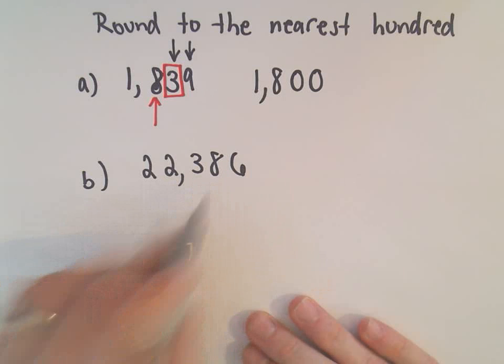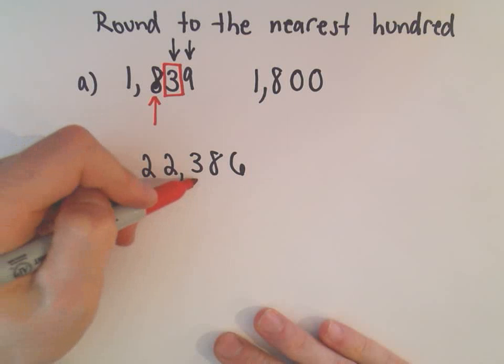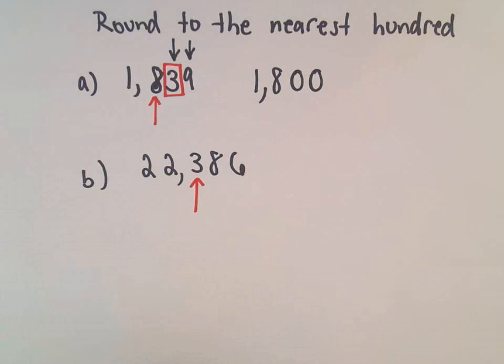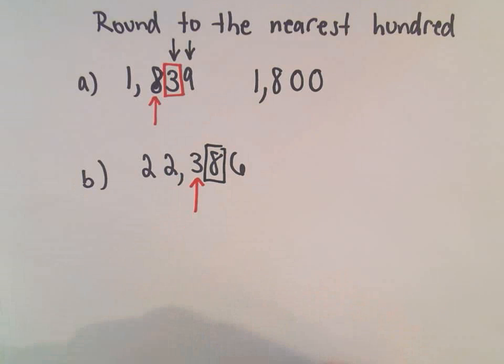Same thing for $22,386. Okay, I'm going to pick out the hundreds place, which would be right there. I look to the right, one digit. So one digit to the right there is my 8.